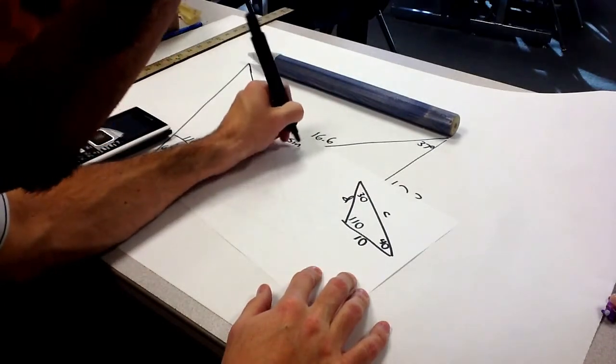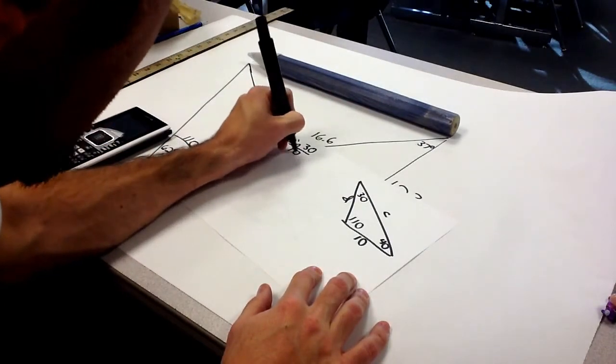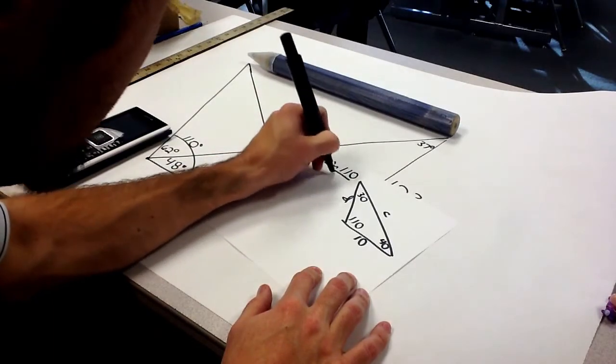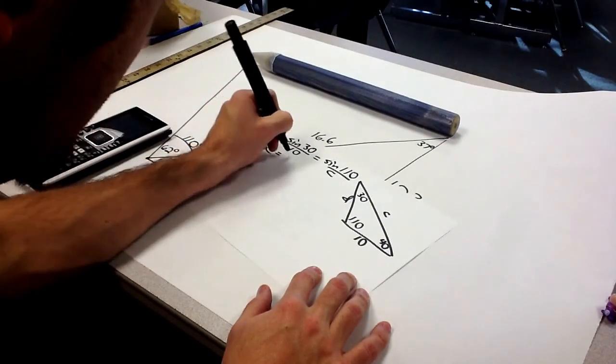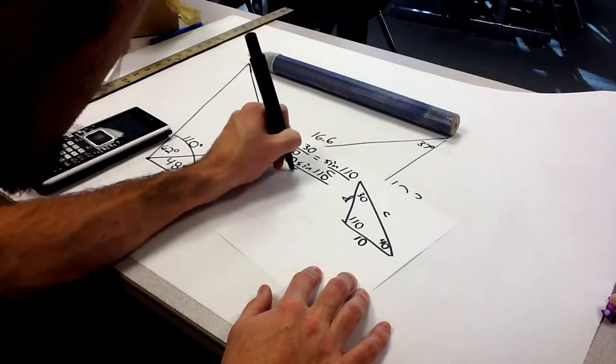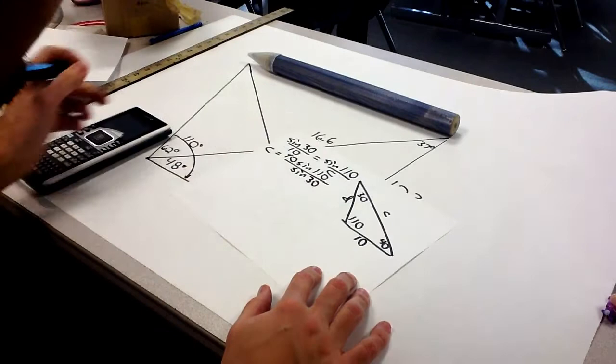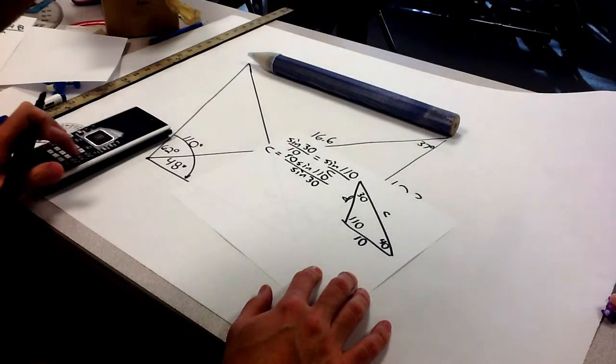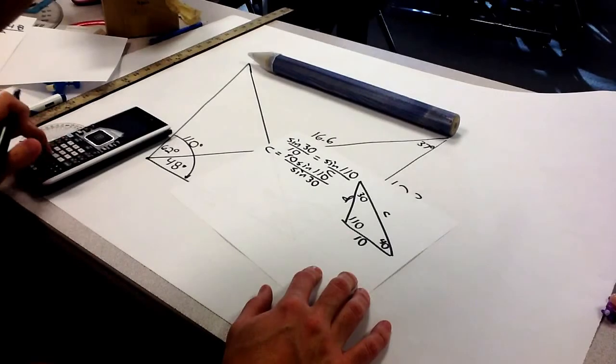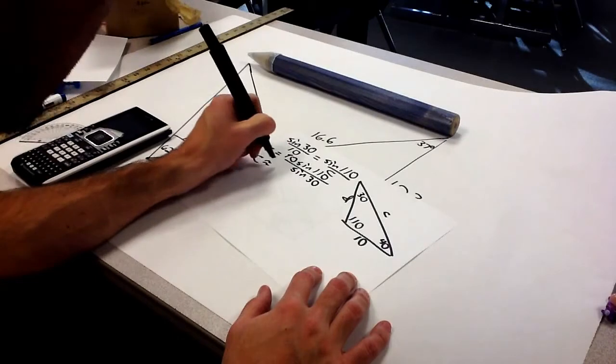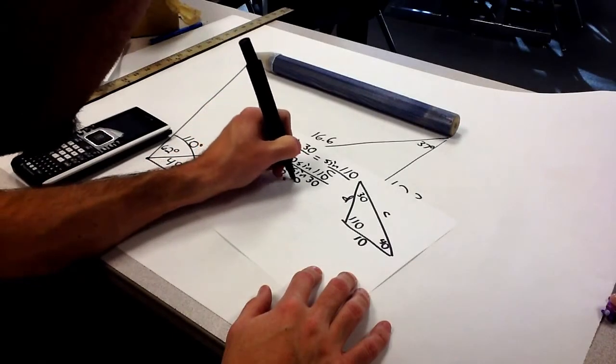So, we'll say sine of 30 over 10 equals sine of 110 over C. C becomes 10 times sine of 110 over sine of 30. So, C is approximately 18.8.